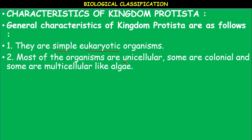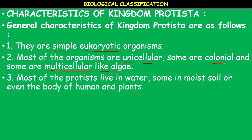Most of the organisms are unicellular — single-celled. Some are colonial, living in groups, and some are multicellular like algae. All of them are eukaryotic. Most Protista live in water; their habitat is primarily aquatic. Some live in moist soil, or even in the body of humans, animals, and plants — meaning some of them may lead a parasitic life.